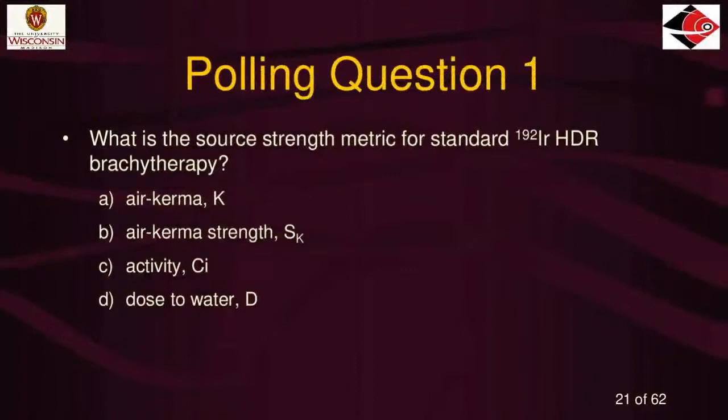We've made it to our first polling question. What is the source strength metric for standard iridium-192 HDR brachytherapy? Is it A, air kerma K; B, air kerma strength; C, activity in curies; or D, dose to water? I'll give you a bit of time to answer this.